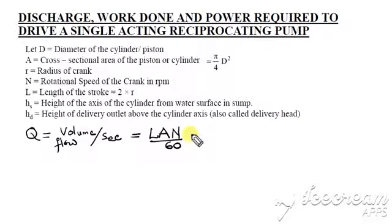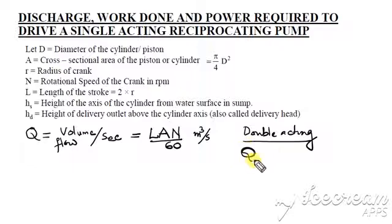For a double acting pump, discharge is approximately twice this expression. However, if you consider the cross-sectional area of the piston rod, the expression will be slightly different. For one side of a double acting pump, Q = LAN/60. But on the other side, the piston rod area must be subtracted from the cross-sectional area of the piston.